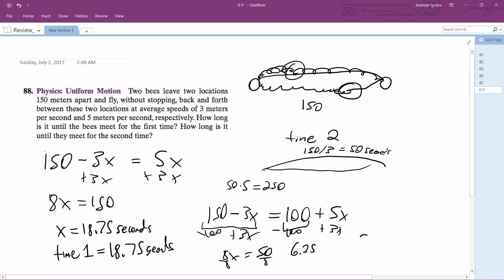But you've got to be careful here. This is 50 plus 6.25 because he already traveled. The 3-meter bee, it took him 50 seconds to get to one end. And so time 2 is equal to 56.25 seconds. Okay. So there's time 2. And there's time 1.